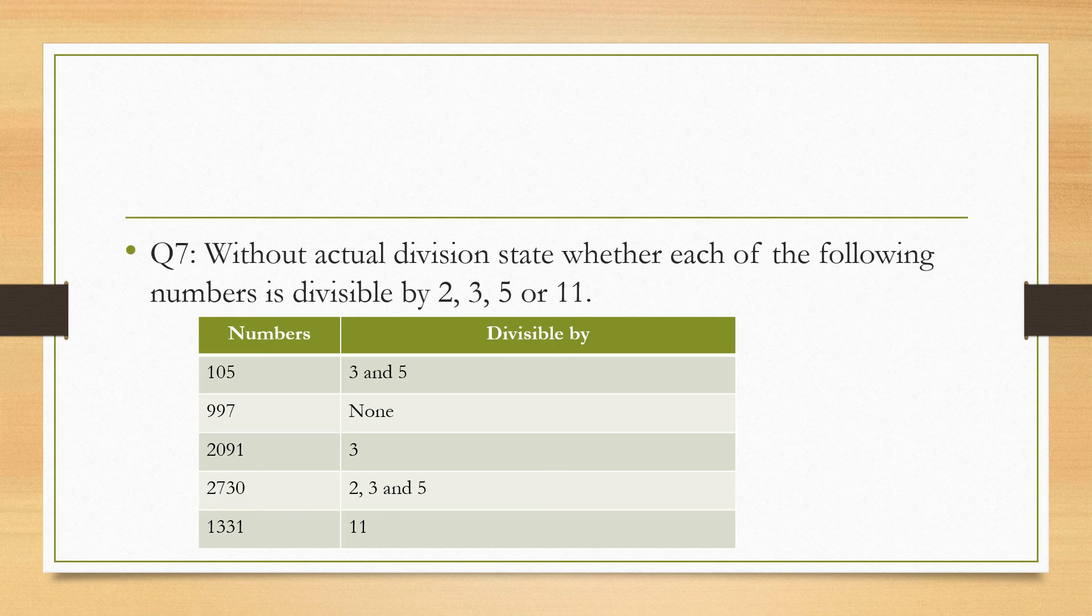As you can see, 997 is not divisible by any number. 2091, by adding this, it is a multiple of 3, so it is divisible by 3. 2730, the last digit is 0, so it is divisible by 2, it is divisible by 5, and by adding 2 plus 7 plus 3 plus 0, we get a number that is a multiple of 3, so it is divisible by 3.